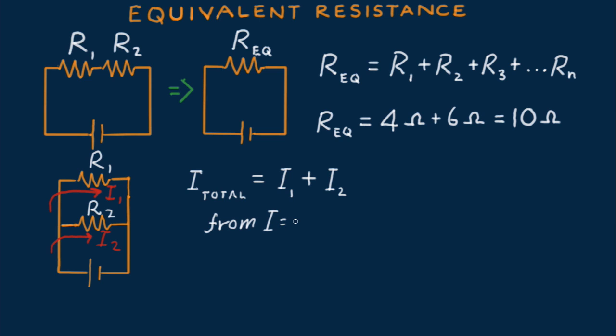And from Ohm's law, substituting V over R for each of the currents I, the single equivalent resistor that can replace the two resistors can be calculated from this equation. And since the battery voltage is the same as voltage across each of the branches, we can divide the equation by V.